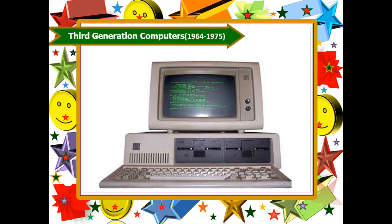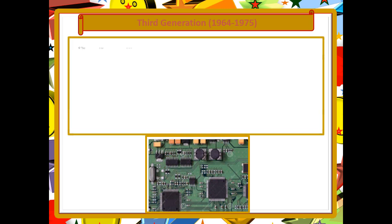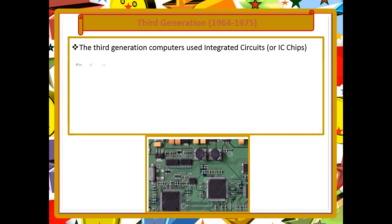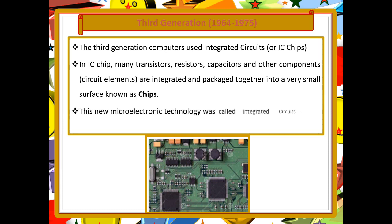The third generation computers started in the year 1964 to 1975. In the third generation computers we used integrated circuits or IC chips. The integrated circuits consist of many transistors, resistors, capacitors and other components that are integrated and packed together into a very small surface known as the chip.